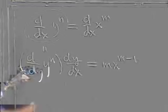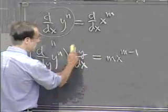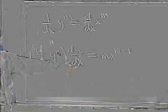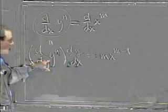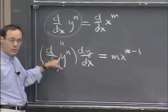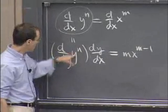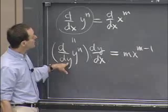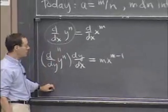So first of all, there are two factors here. One of them is unknown. In fact, it's what we're looking for. But the other one is going to be a known quantity. Because we know how to differentiate y to the n with respect to y. That's the same formula, although the letter has been changed.